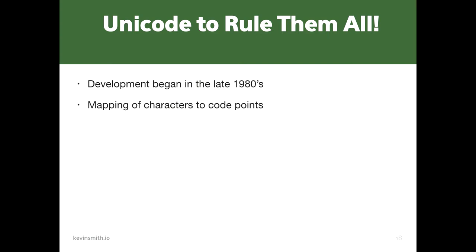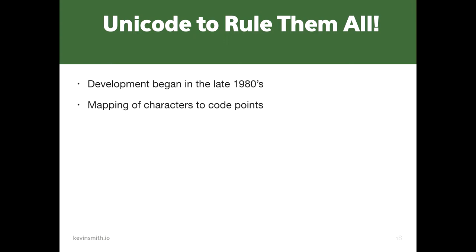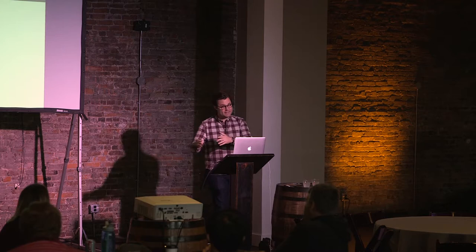Unicode is technically not a full encoding — it's just a mapping of characters to code points. Rather than characters mapped to bytes, it is characters that map to code points. There are over a million code points available in Unicode — 1.11 million have been determined. Currently only 137,000 are used — that's a little less than 13% — so they've got plenty to go, and they've already covered all languages in widespread use.